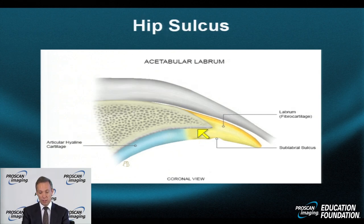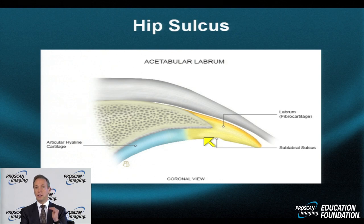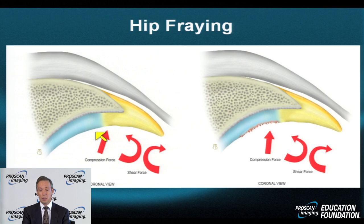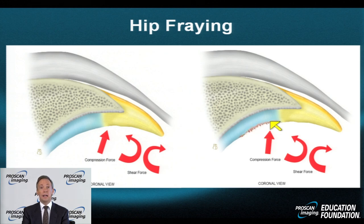Here's an example of a sublabral sulcus — shallow, without depth, without cysts, without inflammation. The sulci can extend all the way anteroinferiorly and often deepen in the anteroinferior quadrant of the hip. Fraying and injury of the hip commonly occurs with a combination of compressive and shear forces, which together may produce fibrillation, thinning, and slight irregularity. This is prominent on the hyaline cartilage side but harder to recognize on the labral side unless a substantive effusion is present.